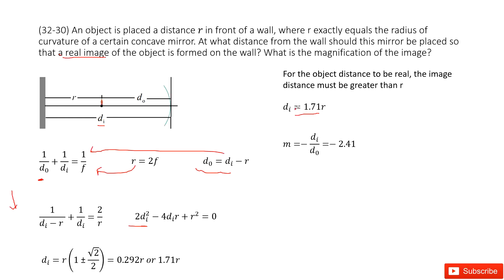After we know the image distance and object distance, we can very easily calculate the magnification as negative di over d0. Thank you.